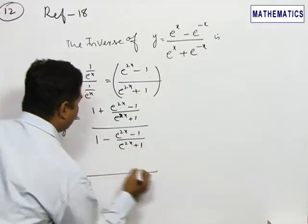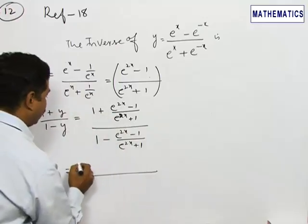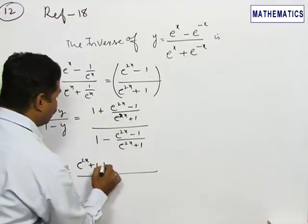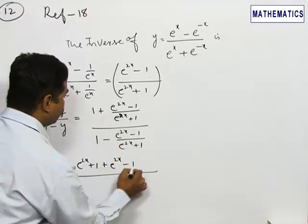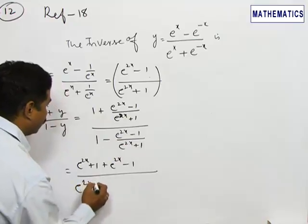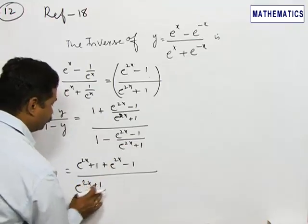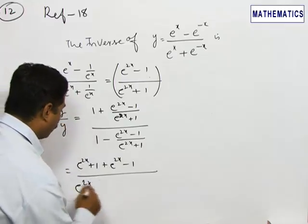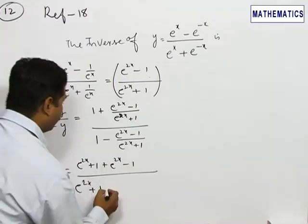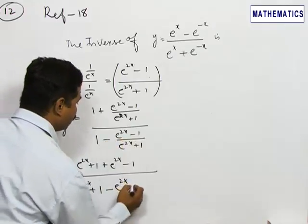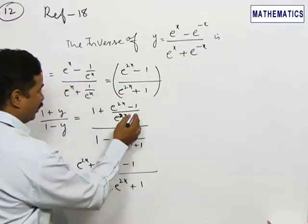Taking the LCM and simplifying, we get (e^(2x) plus 1 plus e^(2x) minus 1) in the numerator. In the denominator, it becomes e^(2x) plus 1 minus e^(2x). The minus outside makes minus of minus become plus 1.